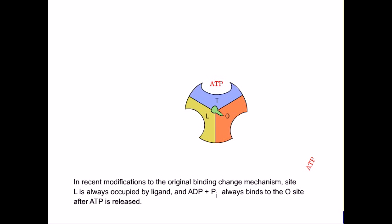This ATP is formed after two more such sequences. The enzyme has returned to its initial step. In recent modifications to the original binding change mechanism, site L is always occupied by ligand, and ADP plus Pi always bind to the O site after ATP is released.